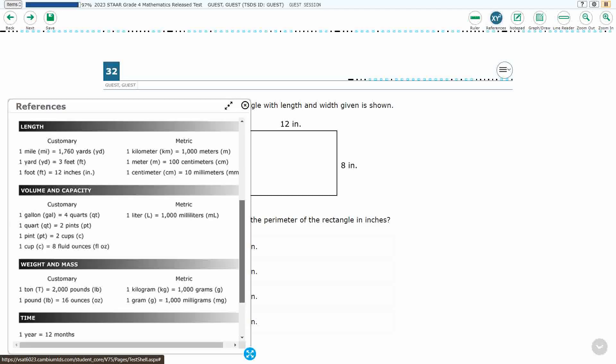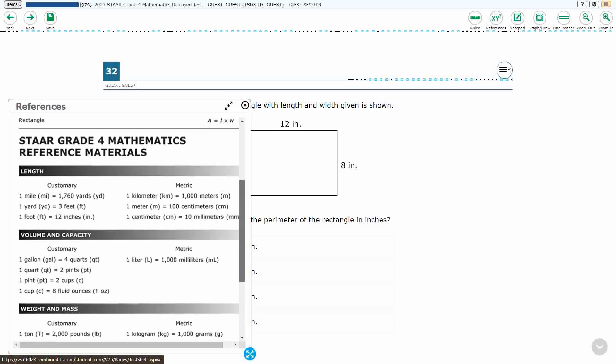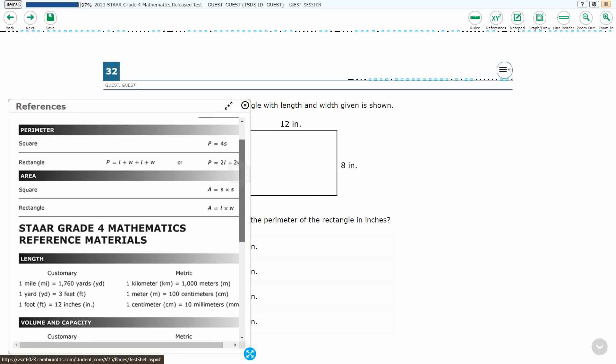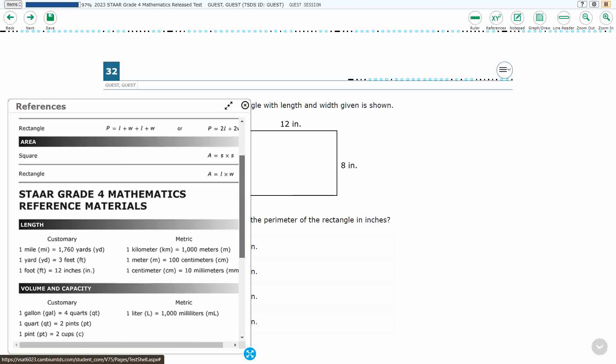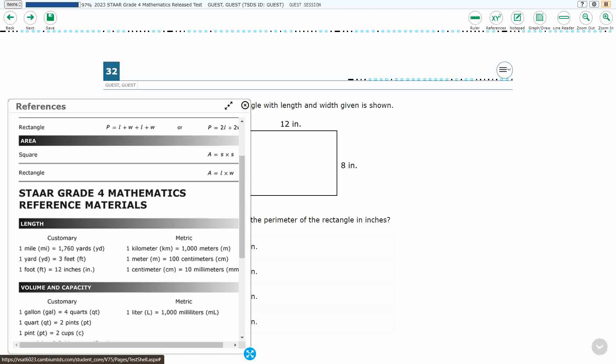Let's open up our reference materials, because we do have some information there. You see perimeter, and I'm going to put it right there at the top. So there's two different ways that we can look at perimeter. Length plus width plus length plus width, or double the length plus width.